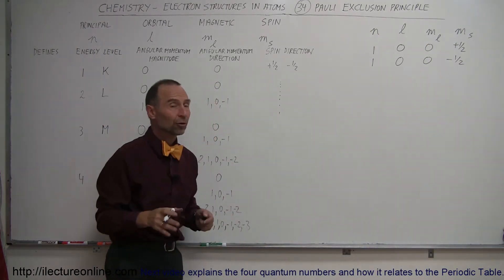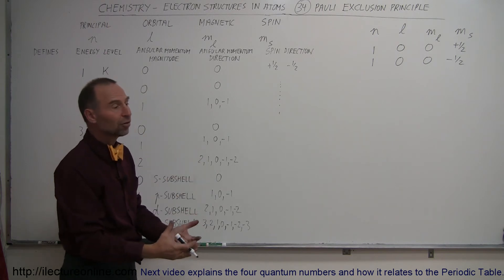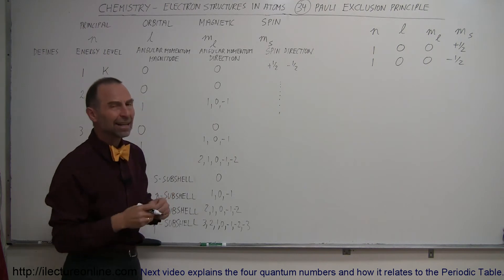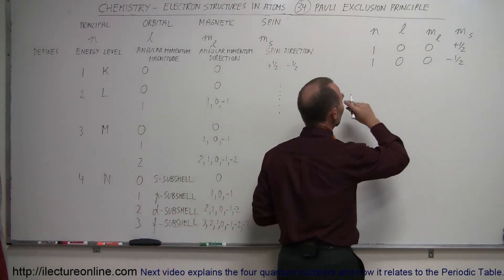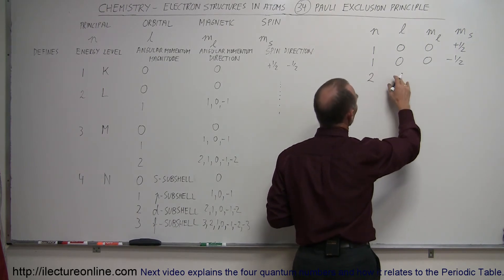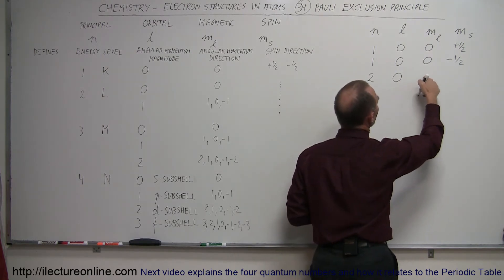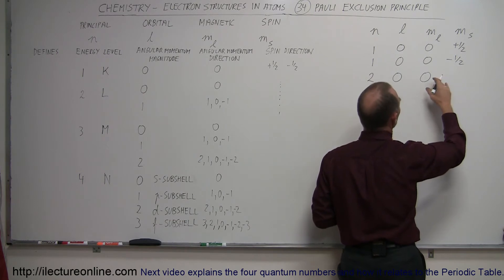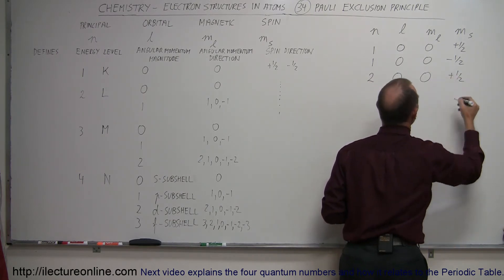That represents the first s orbital in the first energy level. That orbital is now filled with two electrons, so any additional electrons added to the atom must reside in a different location because they cannot have the same quantum numbers. The next electron would be in the second energy level, in the zero orbital level — the s orbital — with a zero angular momentum direction and a plus one-half spin direction.